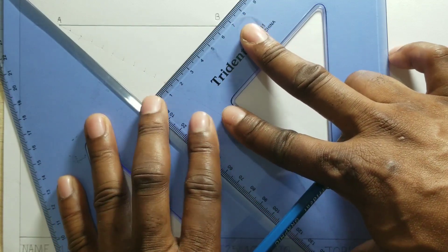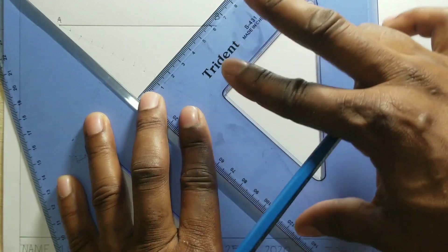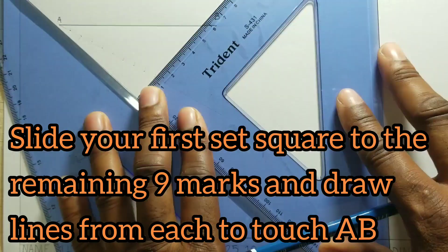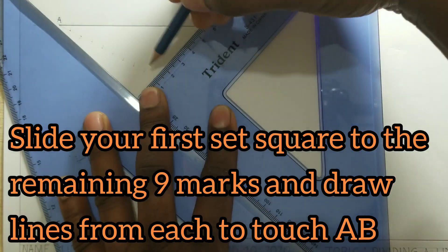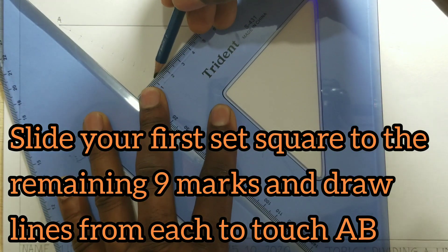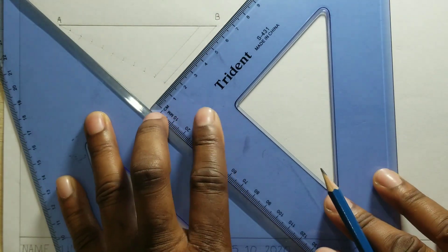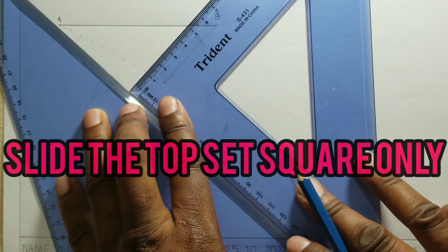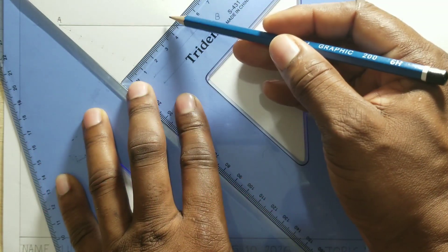Then we will now slide to the 9th position. And we will draw our line. Now we will slide to all the other marks and draw lines to the AB line.